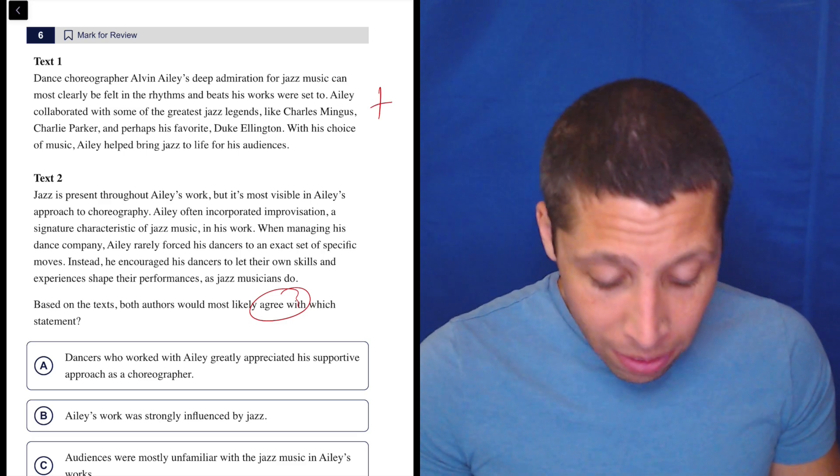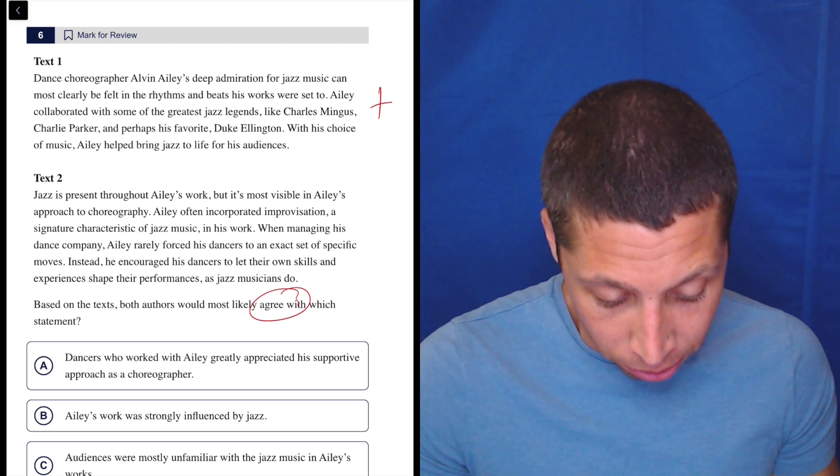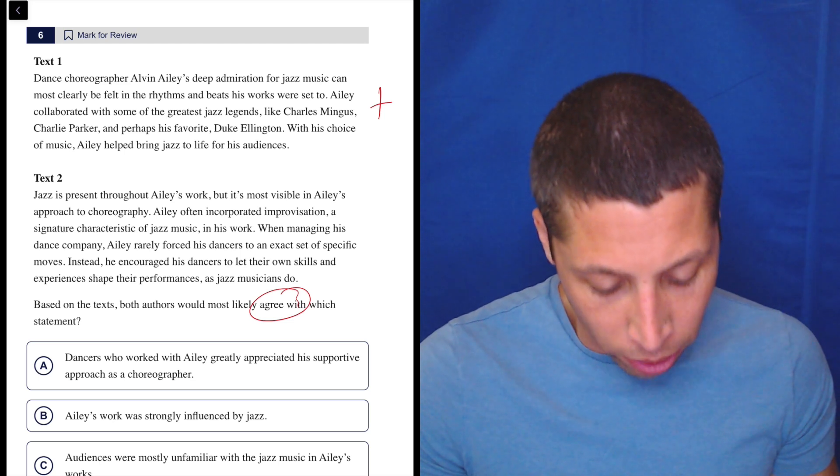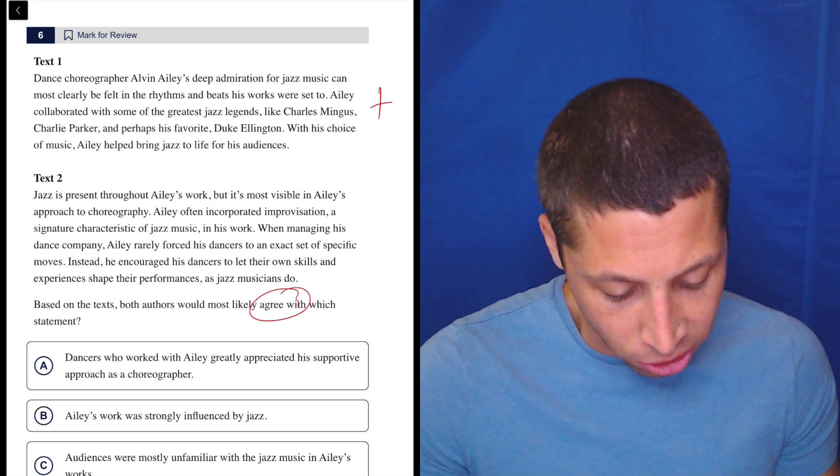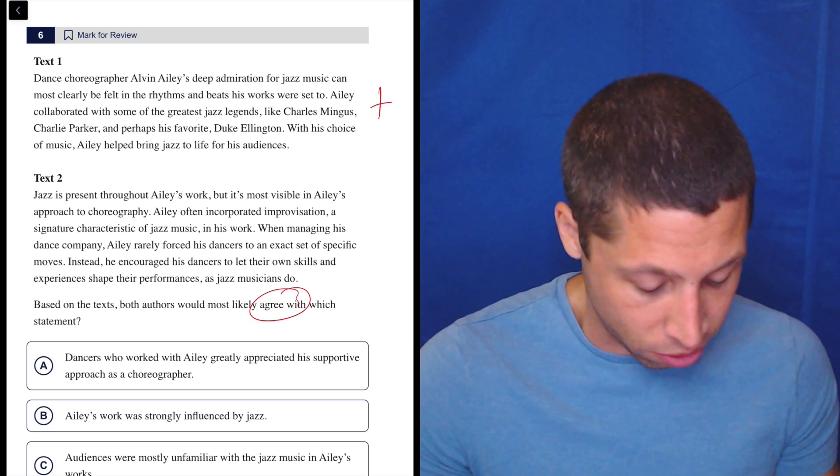Text two: jazz is present throughout Ailey's work, but it's most visible in Ailey's approach to choreography. Ailey often incorporated improvisation, a signature characteristic of jazz music, in his work. When managing his dance company, Ailey rarely forced his dancers to an exact set of specific moves. Instead, he encouraged his dancers to let their own skills and experiences shape their performances as jazz musicians do.